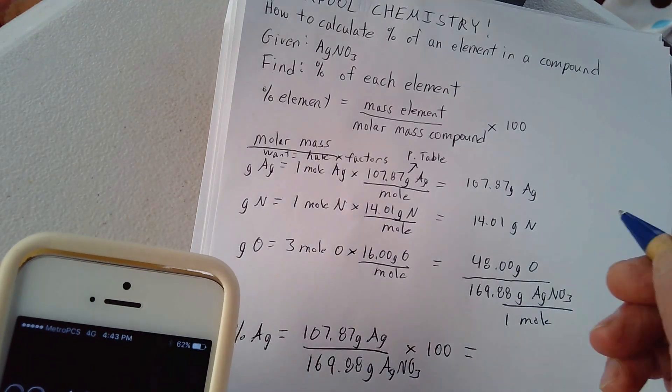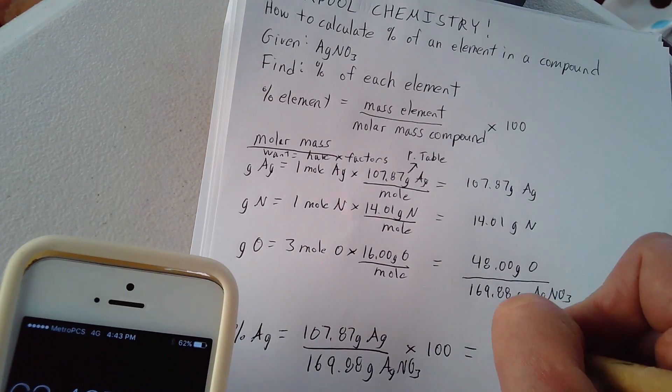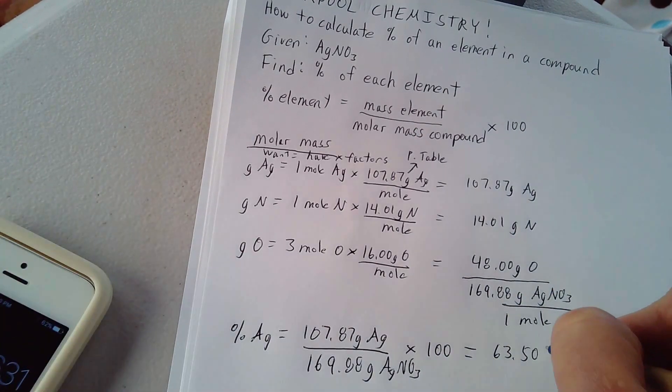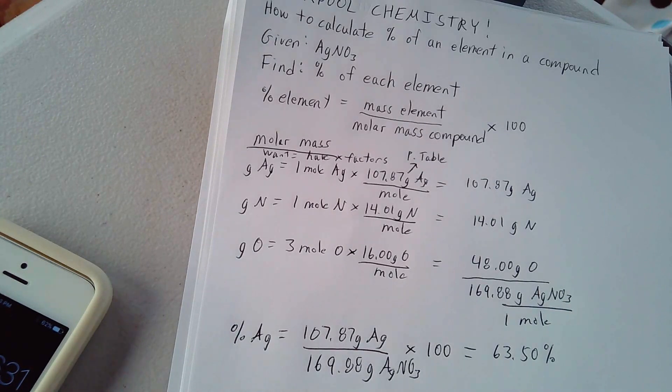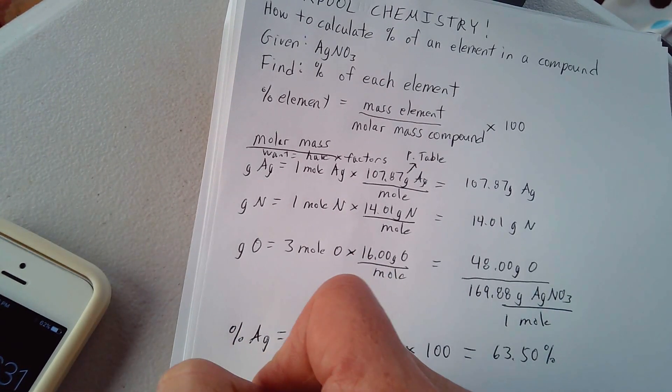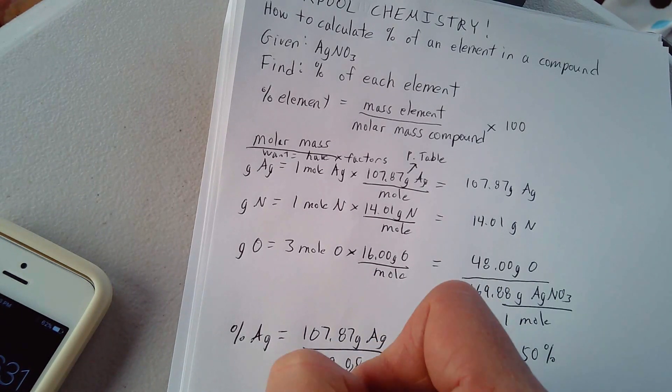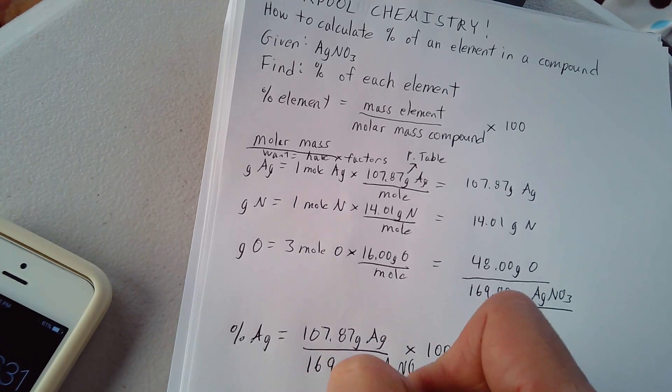Let's take a look at the percentage of nitrogen. Percent nitrogen is equal to 14.01 grams of nitrogen.